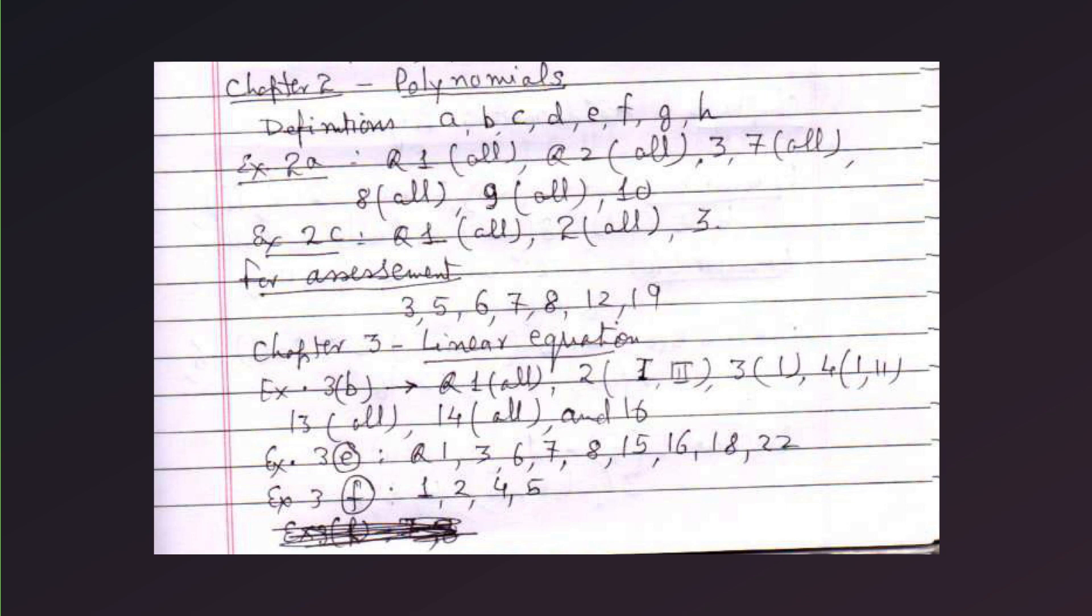Chapter 2, polynomial. Definitions you have to study A, B, C, D, E, F, G, and H. Now, exercise 2A, question 1 all, 2 all, 3, 7 all, question 8 all, and then 9 all, 10. Exercise now 2C, question 1 all, 2 all, 3. And for assessment, 3, 5, 6, 7, 8, 12, 19.